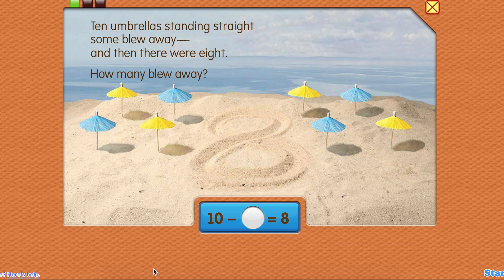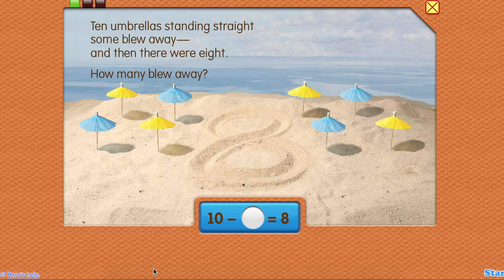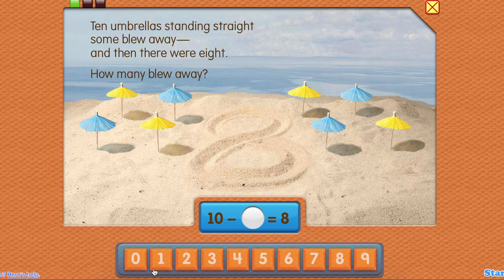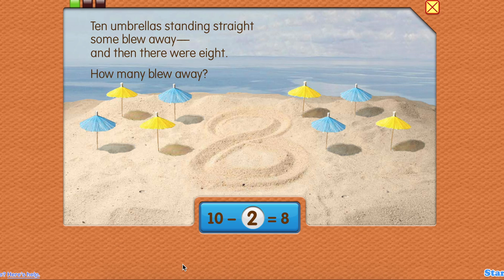Now let's solve the equation. How many blew away? Two. Ten minus two equals eight.